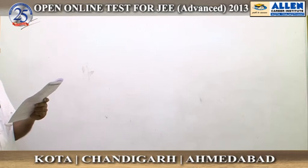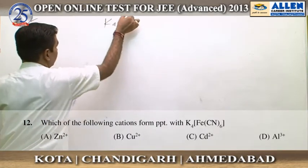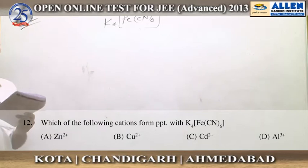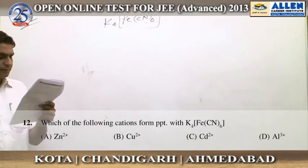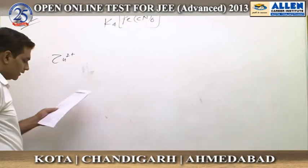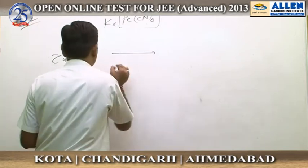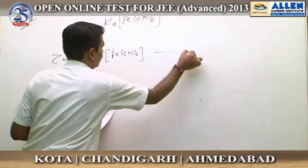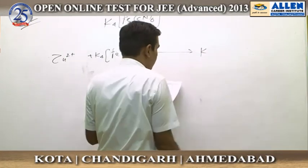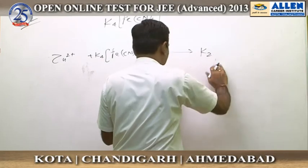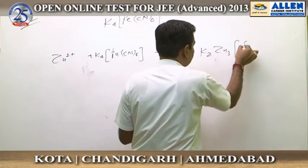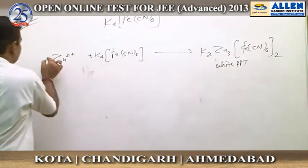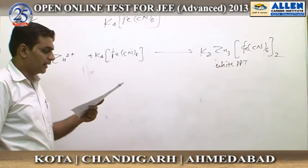Question number 12: which of the following cations form a precipitate with potassium ferrocyanide, K4Fe(CN)6? This is a very important reagent for salt analysis — many cations produce different colored precipitates and it is used for identification. Option A — zinc (Zn2+): when it reacts with potassium ferrocyanide it produces a white-colored precipitate of variable composition; with excess reagent the composition is K2Zn3[Fe(CN)6]2, a white precipitate.